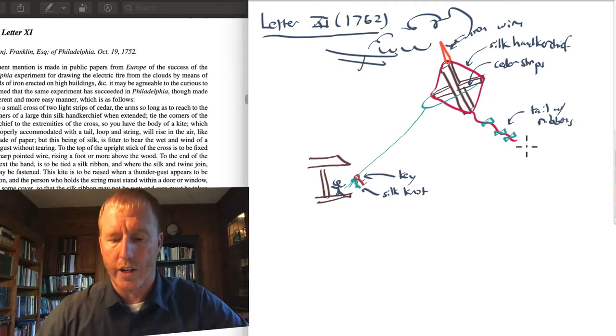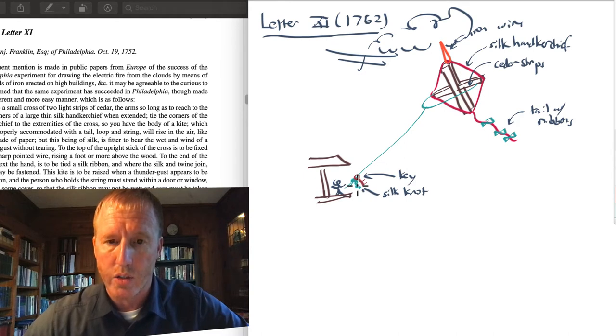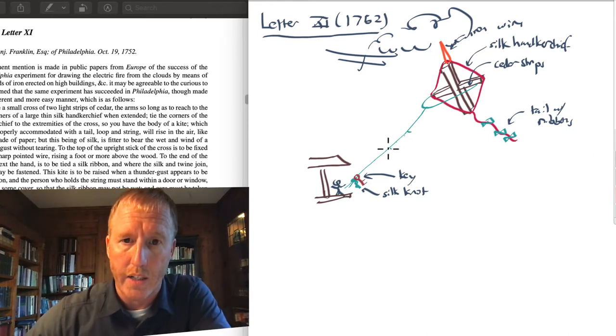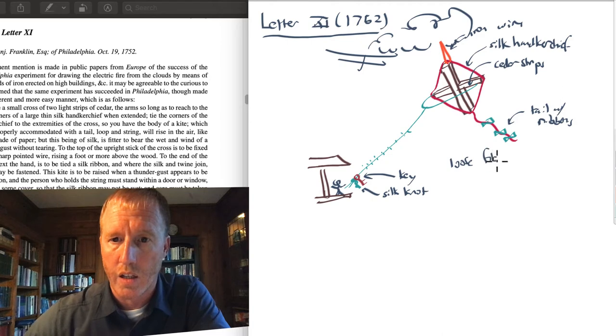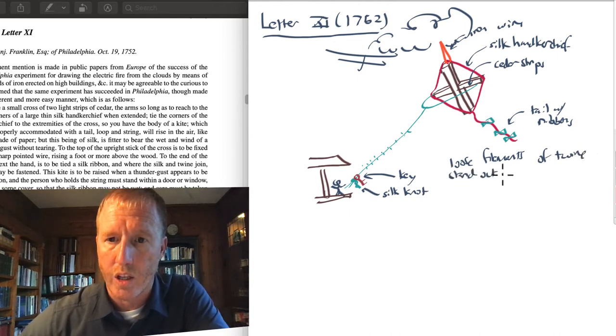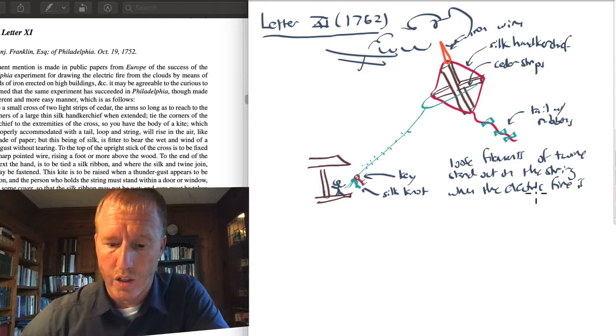And he mentions that electrical fire can be drawn from the thunderclouds by means of this iron wire. And this electrical fire, he says, is drawn through the wire down the string like this toward the key. And you know that this is happening when the thunderstorm comes because there are tiny filaments on this twine that begin to stand up. So you might imagine if there's positive electricity coming down this wire, all these little fibers become positively charged. They repel one another. And so they sort of stand out like this. So he says these loose filaments of the twine stand out on the string when the electric fire, as he says, is drawn from the thunderclouds.